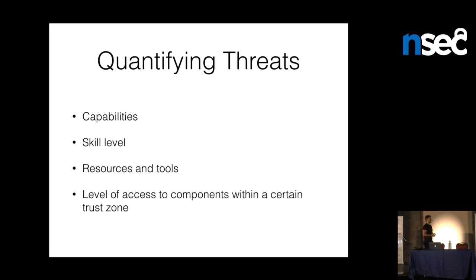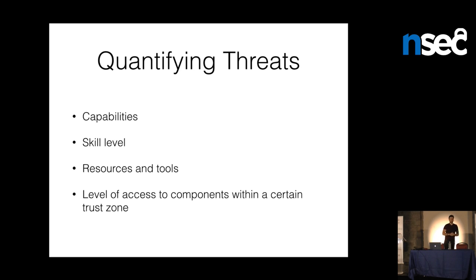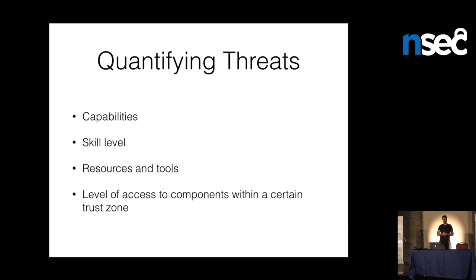The skill level associated with those capabilities ranges from script kiddies running point-and-click tools to attackers who do their own fuzzing, their own exploit research, build their own exploits, and deliver them in a near-undetectable manner. Then there are the resources and tooling associated with a given threat actor. Consider organized crime or well-funded nation-state attackers — they may not have the skills in-house, but they have money to throw at the problem, just like any other business, and can hire people to work on their behalf.